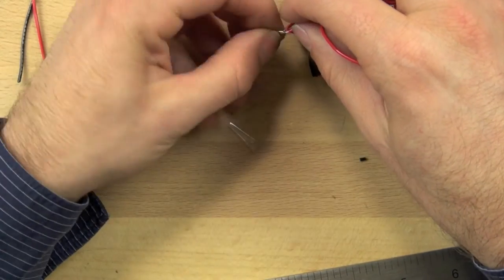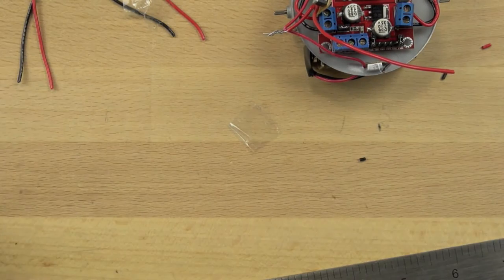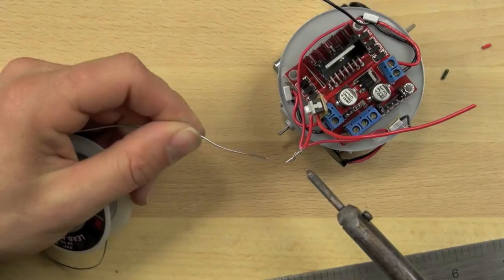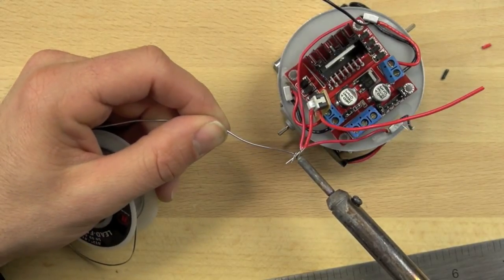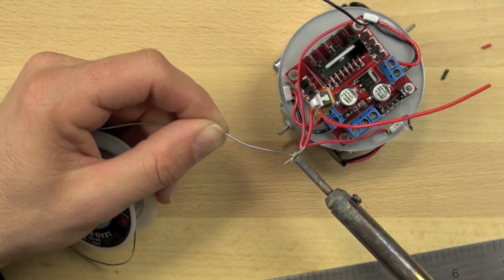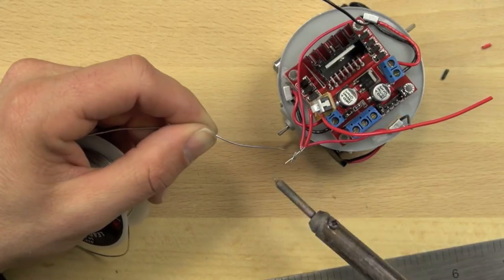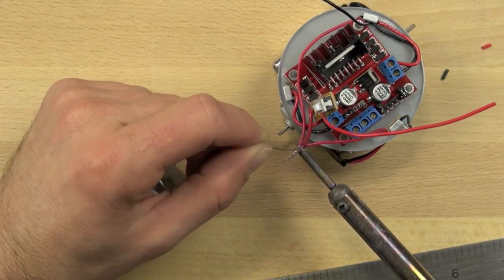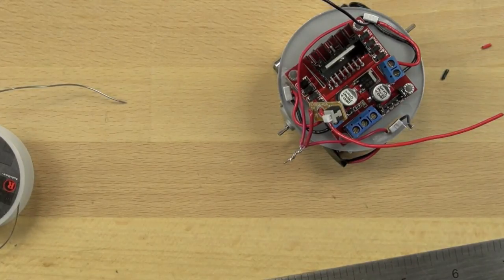Once we have them twisted together very tightly we'll take our soldering iron, which is already hot, and we'll warm the wires up and then put a little bit of solder on them. That'll help to make sure that they stay completely together. That'll just keep the wires held together.